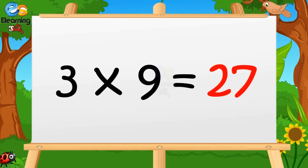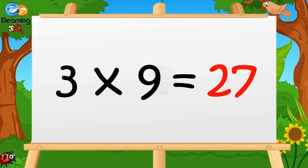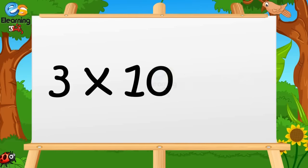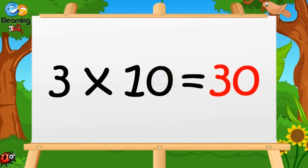Three nines are twenty-seven. Three tens are thirty.